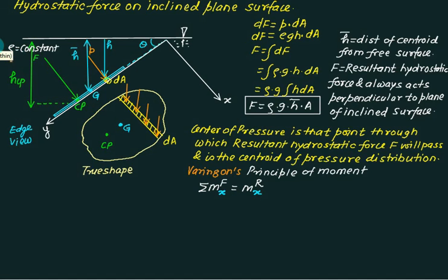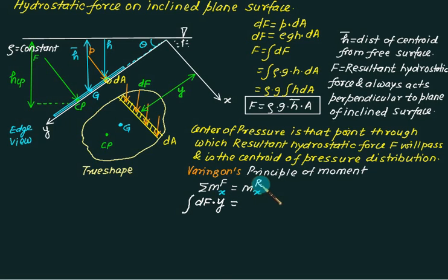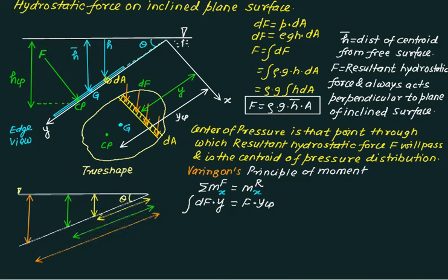So if I want to take the moment about the x-axis, I will take this distance — this force is DF force, and this distance is measured along the y-axis, perpendicular to the x-axis. That is exactly the definition of moment: moment is defined as force multiplied by perpendicular distance. This force is your DF force, and as the element moves, I get the next value. So the sum of moments about the x-axis equals the integral of DF multiplied by distance, which equals the moment of the resultant force F multiplied by YCP.